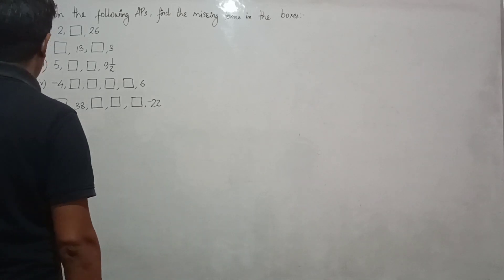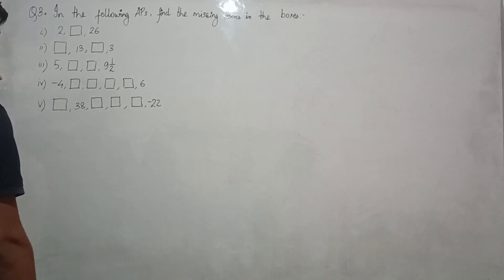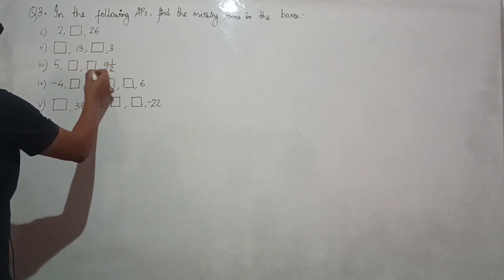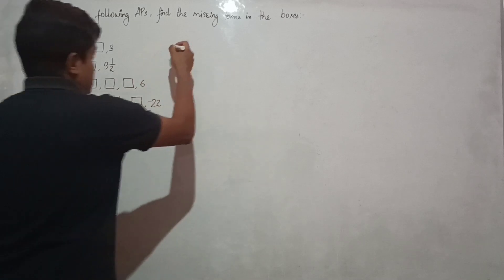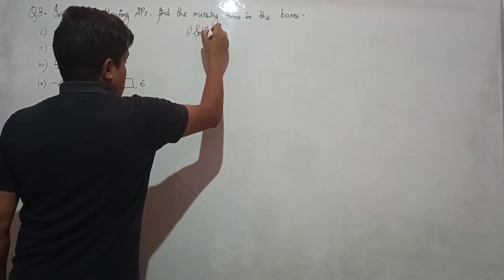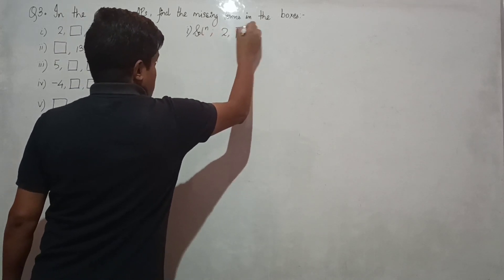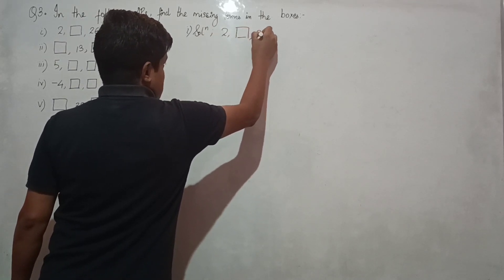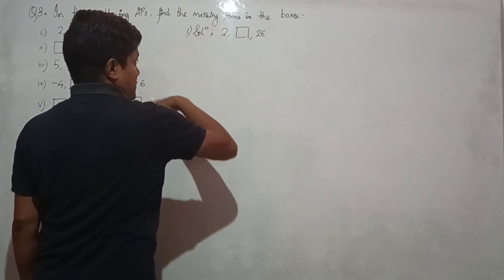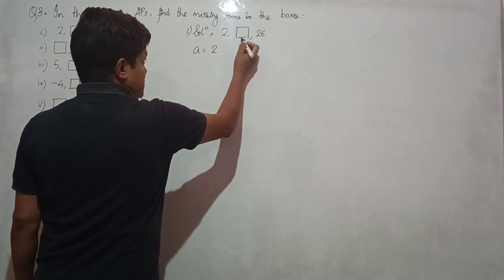Question number three: find the missing term in the boxes. One solution — this is an AP. Let us write the AP. The sequence has a box, then 26. The first term is 2 and we don't know the common difference.